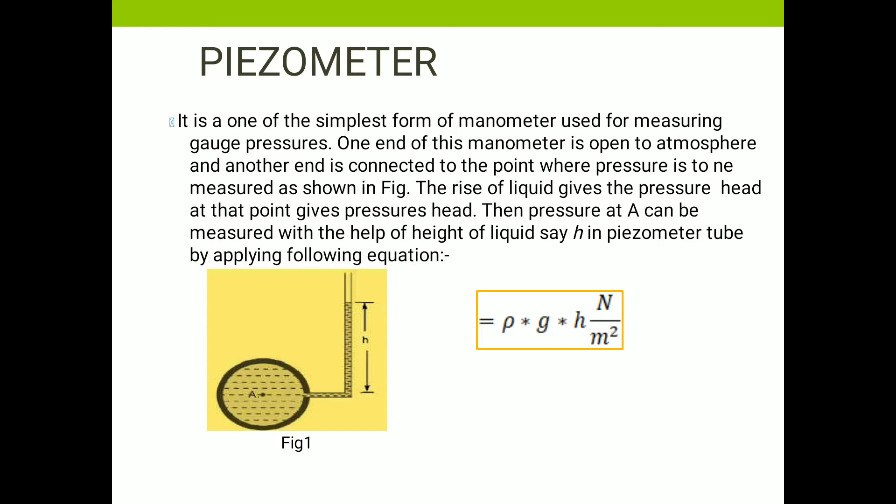Piezometer — it is the simplest form of the manometer, which is used to measure the gauge pressure. One end of this device is open to the atmosphere, and another is connected to the point where pressure is to be measured, as shown in figure number one. The rise of the liquid gives the pressure head at the point.